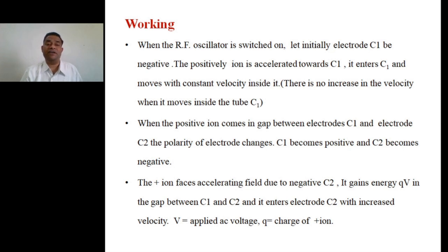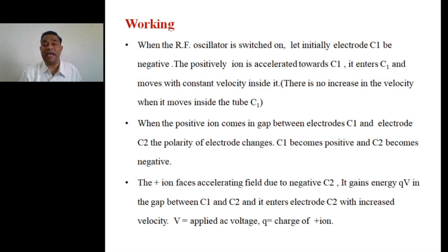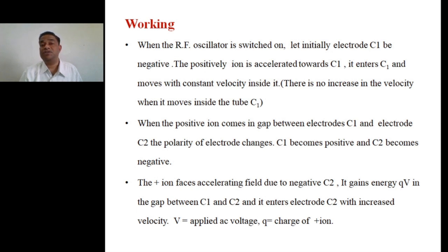Working of the linear accelerator: the RF oscillator is switched on and a positive ion is emitted by the positive ion source. Let initially the electrode C1 be negative. The positive ion faces an accelerating field, so it is immediately accelerated towards C1. It enters C1 and begins to move with constant velocity inside it. The electric field exists only on the surface of the electrode; inside the hollow structure there is no electric field, so the particle moves with constant velocity inside the electrode.